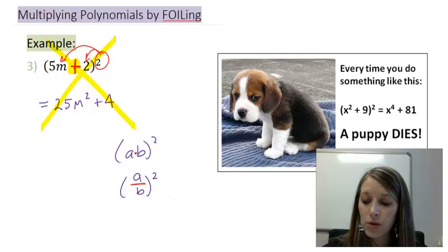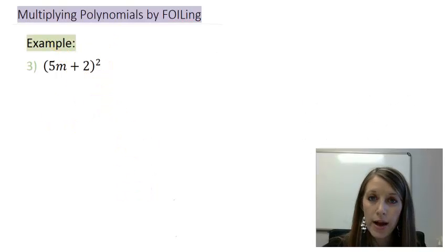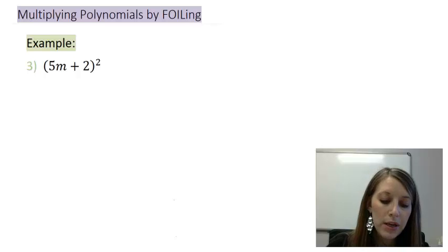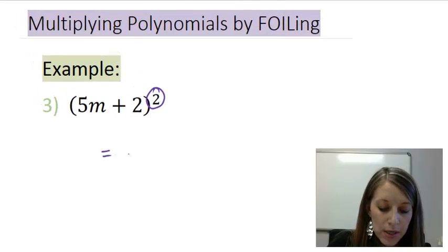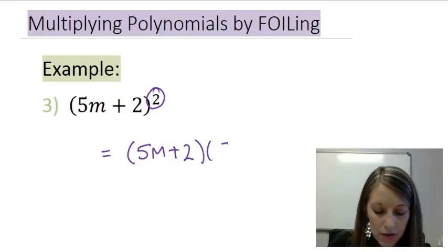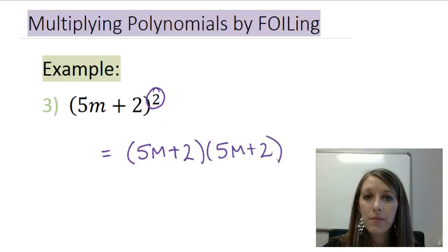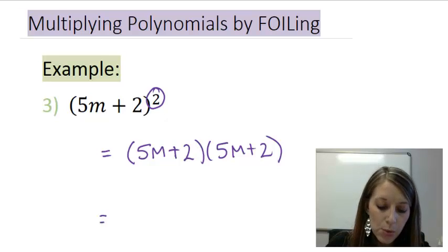Well, if that's the wrong way to do that, let's go back and see the correct way to do this. Well, what we need to do is we just need to write out what an actual exponent means. It means we take the base times itself two times. And so, now we can see that this is a perfect example of foiling. It's a binomial times a binomial, or a two by two. So, we complete this one by foiling.